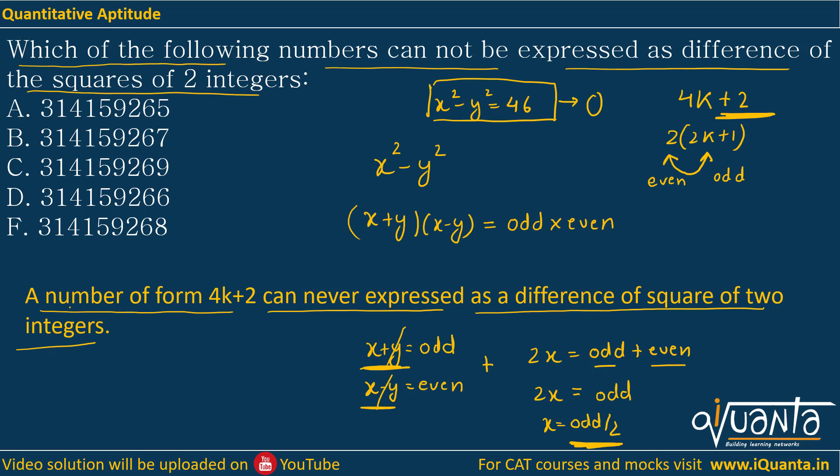Divisibility of 4 is determined by the last 2 digits. We will divide the last 2 digits of all the numbers and check in which case we are getting 2 as the remainder. If you divide 65 by 4, you get remainder 1. You divide 67 by 4, you get remainder 3. You divide 69 by 4, you get remainder 1. You divide 66 by 4, you get remainder 2. You divide 68 by 4, you get remainder 0.